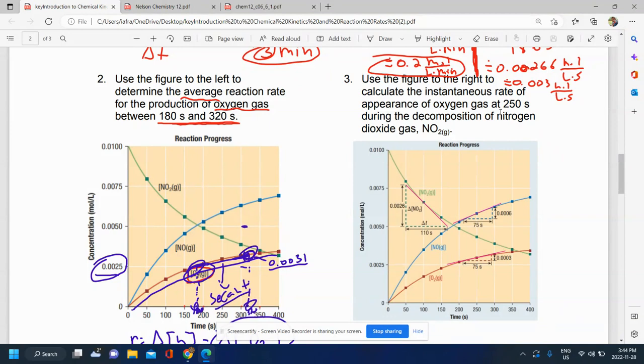Remember, the instantaneous rate is at a specific point in time as opposed to over a time interval. The average rate was simply calculating the slope of the secant, whereas the instantaneous rate is calculating the slope of a tangent that you draw onto the curve at the point that you're interested in.